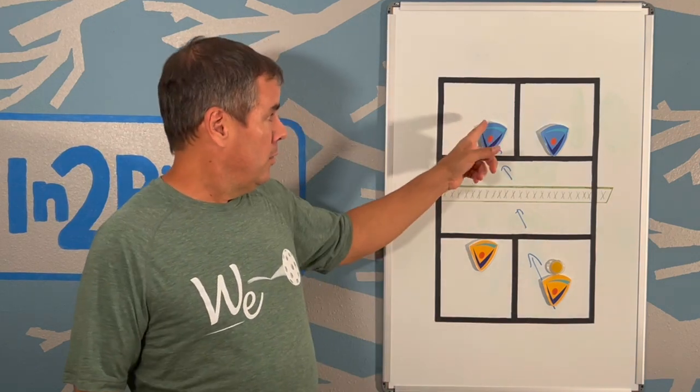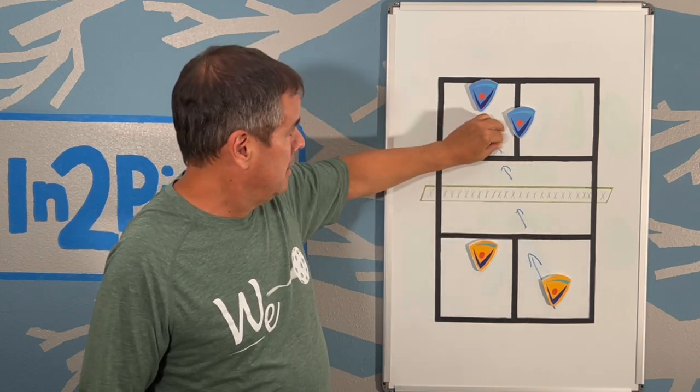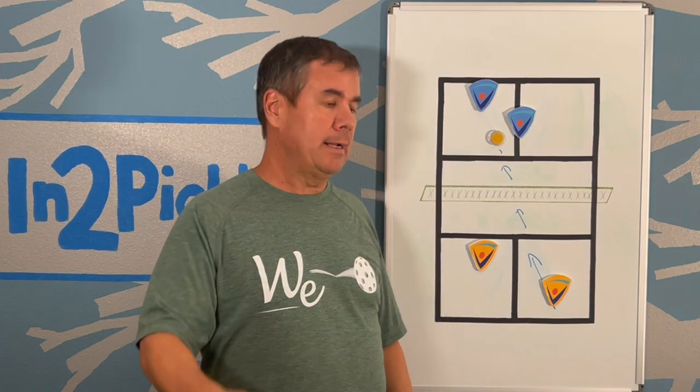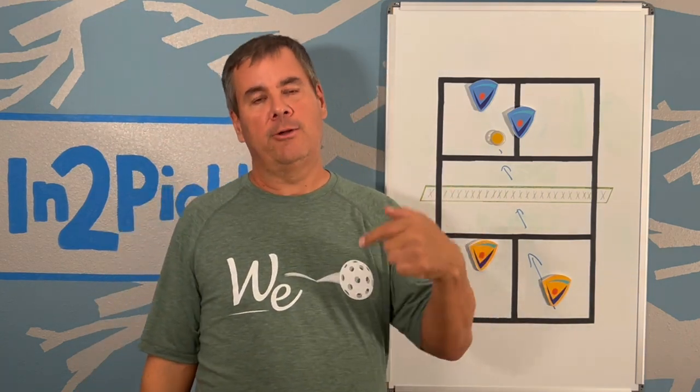So the answer to the question is, if you get a short return of serve and you're breaking the X like this, whether you should go here or here, statistically the better shot is going to be to go here and set yourself up to win it on the next shot or the shot after that.